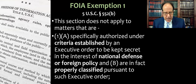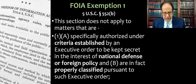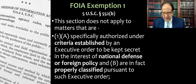Here's our first FOIA exemption. This section does not apply to matters that are: (1)(A) specifically authorized under criteria established by an executive order to be kept secret in the interest of national defense or foreign policy, and (B) are in fact properly classified pursuant to such executive order. We usually call this the national security exemption to FOIA — basically information that could affect national security.